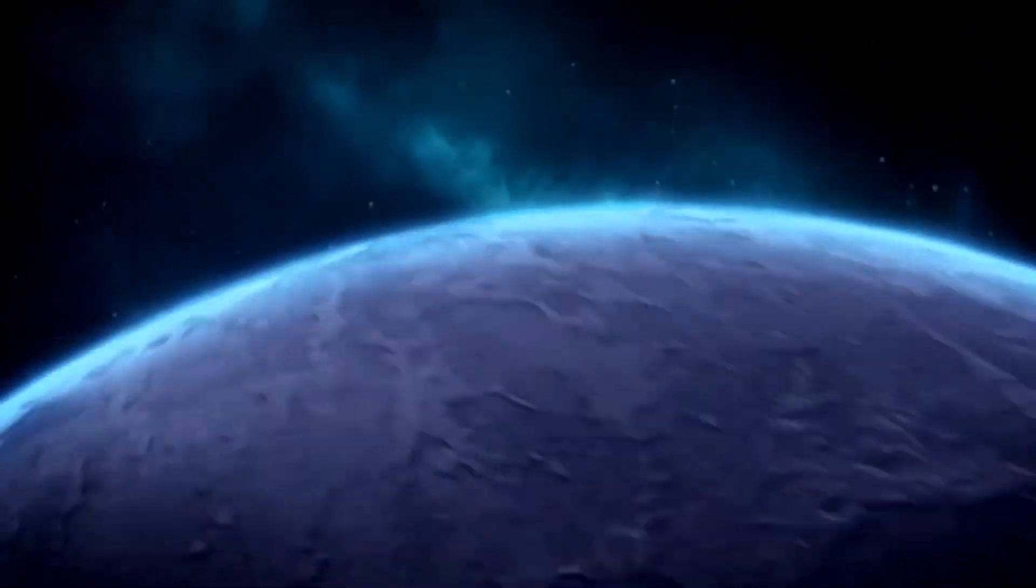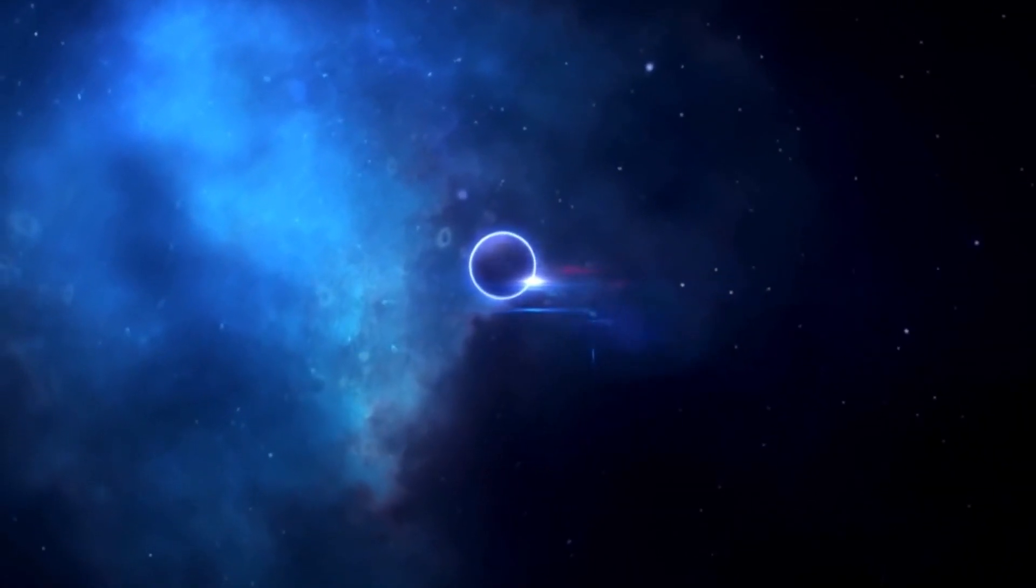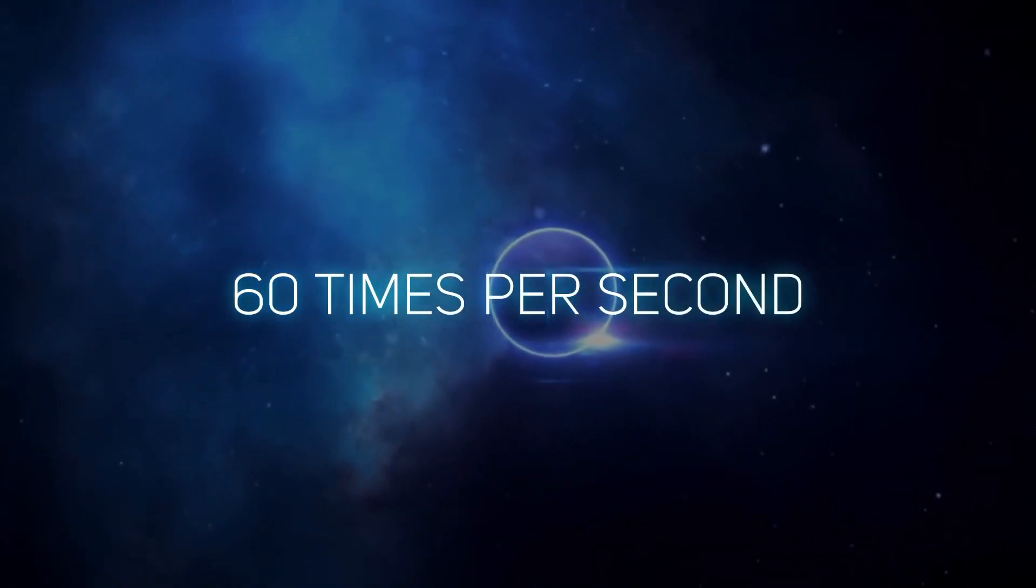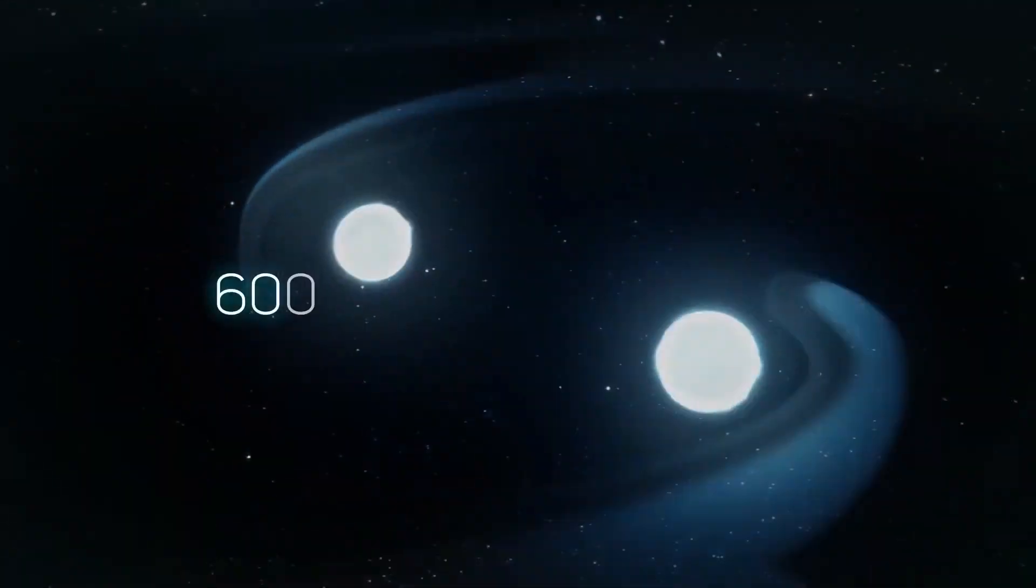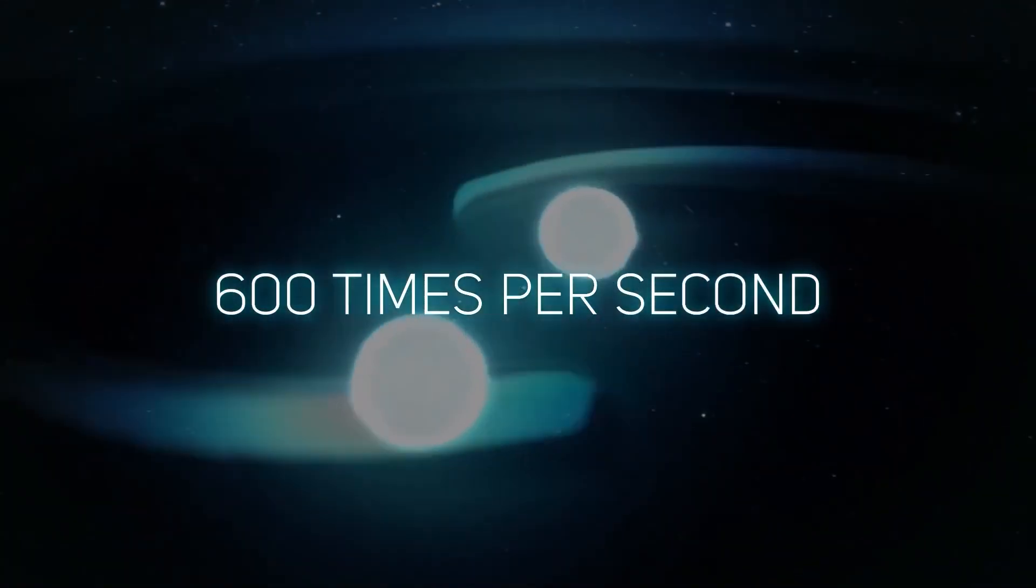And they spin. When newborn, neutron stars rotate at 60 times per second. And when part of a binary system, the speed gets up to 600 rotations a second.